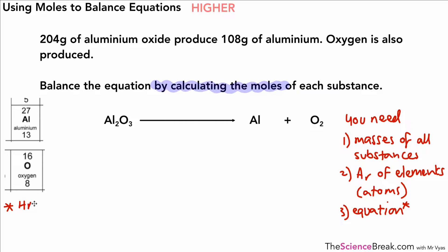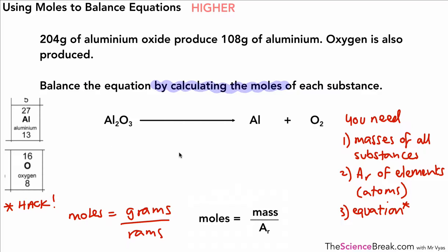Here's a little hack to help remember the equation: moles is grams over rams. That means grams over relative atomic mass or relative formula mass. Remembering 'grams over rams' is a good trigger to recall the formula.